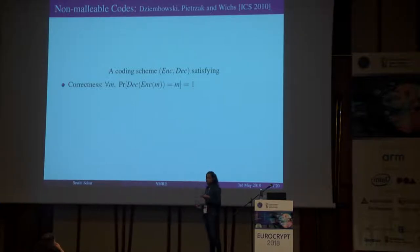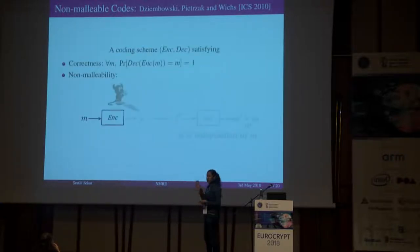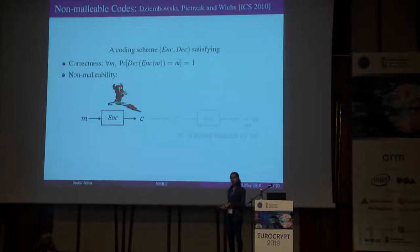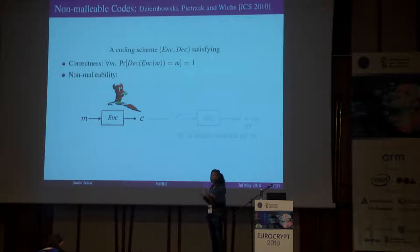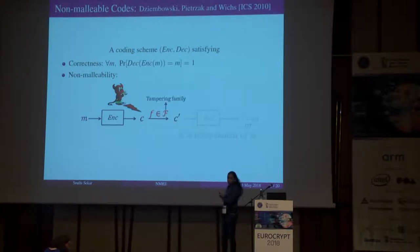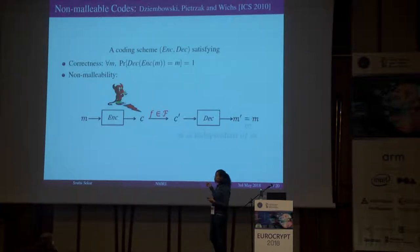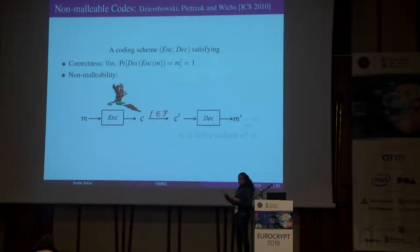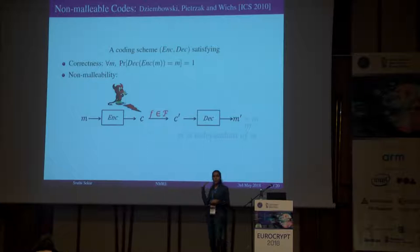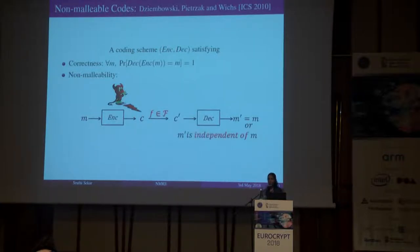In addition, we have the property of non-malleable codes. You encode the message to a code word C, and this code word is then given to an adversarial tamper. The adversary picks a function from a specific function family, called the tamping family. The code word is modified to C prime, from which you recover the modified message M prime. The non-malleability guarantee is that this modified message should either be the same as the original message, or something independent of it.